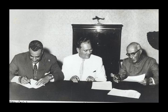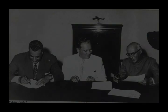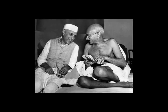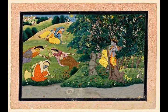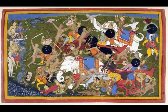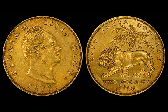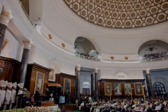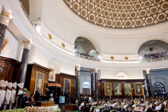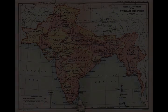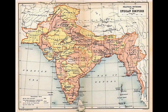With 1,210,193,422 residents reported in the 2011 Provisional Census report, India is the world's second most populous country. Its population grew by 17.64% from 2001 to 2011, compared to 21.54% growth in the previous decade. The human sex ratio, according to the 2011 census, is 940 females per 1,000 males. The median age was 28.7 as of 2020. The first post-colonial census, conducted in 1951, counted 361 million people. Medical advances made in the last 50 years as well as increased agricultural productivity brought about by the Green Revolution have caused India's population to grow rapidly. The average life expectancy in India is 68 years: 69.6 years for women and 67.3 years for men. There are around 50 physicians per 100,000 Indians.